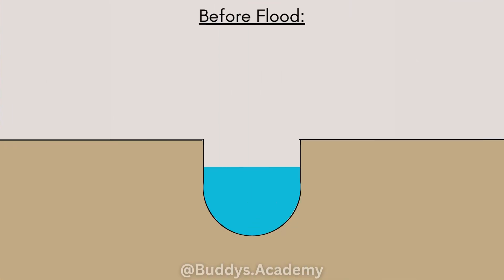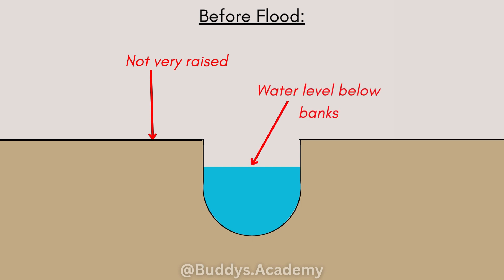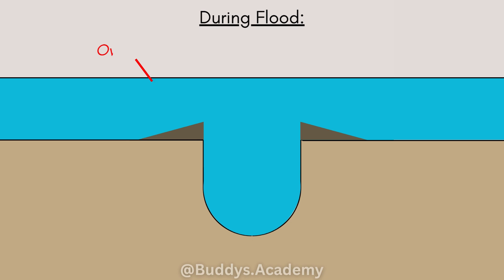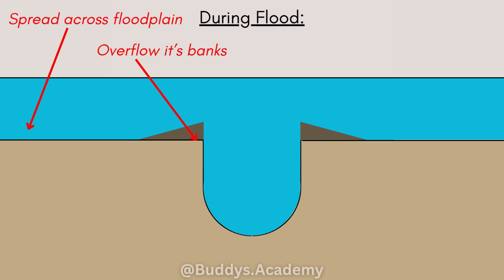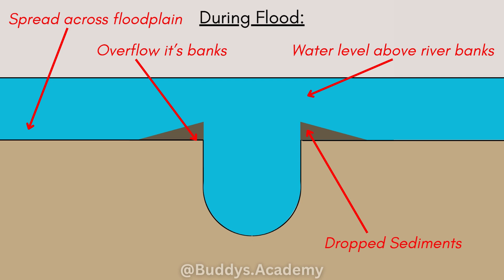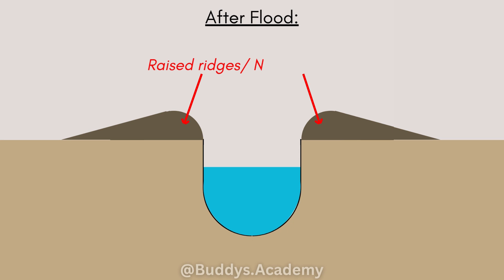So how do natural levees actually form? Before the flood, the river banks are not very raised and the water level is well below your river banks. When a river floods, it overflows its banks and spreads across the floodplain — you can see the water level is well above the river banks during a flood. As the water leaves the main channel and recedes, it loses energy and drops its heaviest sediment closest to the river bank, things like silt and sand. Your finer particles are then carried further into the floodplain. Over time, this repeated process builds up raised ridges or embankments along the sides of the river, known as natural levees, raising the river level higher than the floodplain.